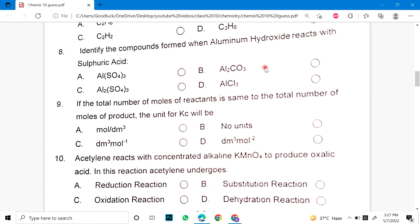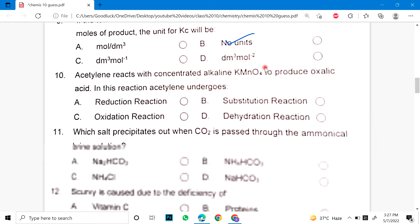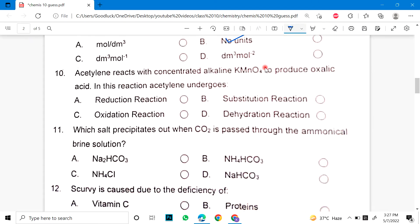Identify the compounds formed when aluminum hydroxide reacts with sulfuric acid. Number 9. If the total number of moles of reactant is same to the total number of moles of product, the unit of Kc will remain, will be no unit. Number 10. Acetylene reacts with concentrated alkaline KMnO4 to produce oxalic acid. In this reaction, acetylene undergoes reduction, substitution, oxidation or dehydration.